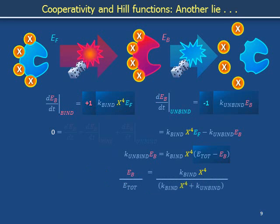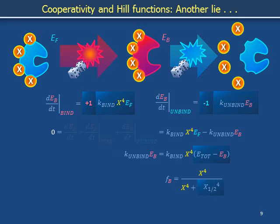Then move all terms containing E_b to the left side of the equation, isolating the term K_bind X^4 E_tot on the right-hand side. Cross-multiply. Relabel the ratio of bound enzyme population E_b over total enzyme population E_tot as the bound fraction F_b. And finally, relabel the ratio of coefficients K_unbind over K_bind as the concentration X_half to the 4th power. This is called a Hill function with Hill coefficient 4.